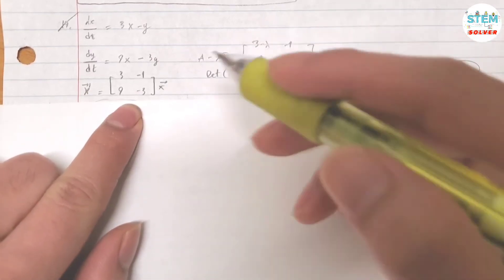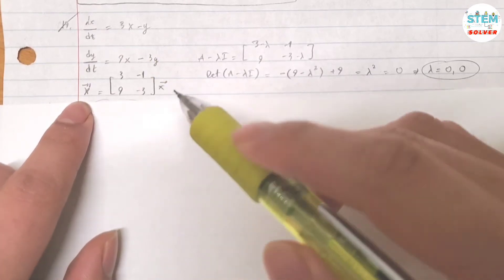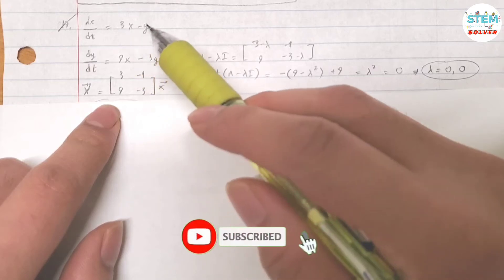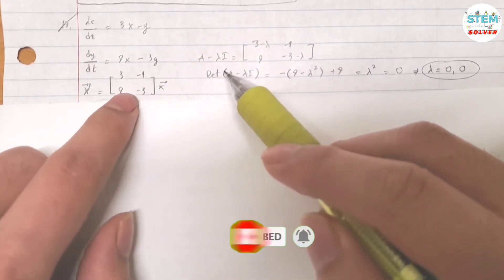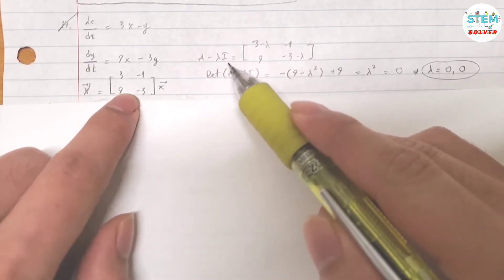Actually, the first step is to put it into a vector X prime form. Basically, you take the leading coefficients of x and y and put them into this matrix. Let's call this matrix A, then find A minus lambda I by subtracting lambda times the identity matrix.